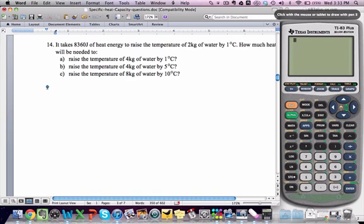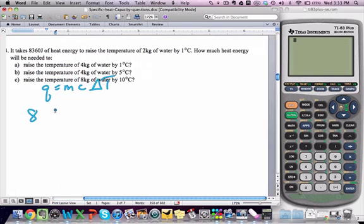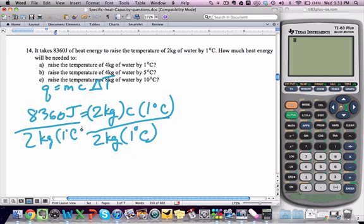On to number 14. It takes 8,360 joules of heat energy, so Q equals mc delta T. Q is 8,360 joules. Our mass is 2 kilograms of water. We get the 1 degree Celsius temperature change, so we solve for C. We divide both sides by 2 kilograms times 1 degree Celsius. Over here this all cancels out, and we're left solving for C, the specific heat capacity of water.